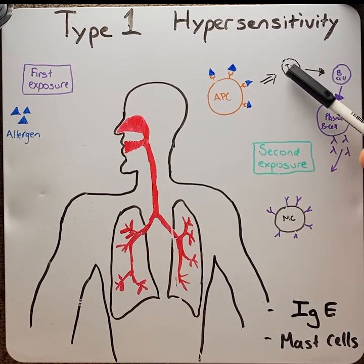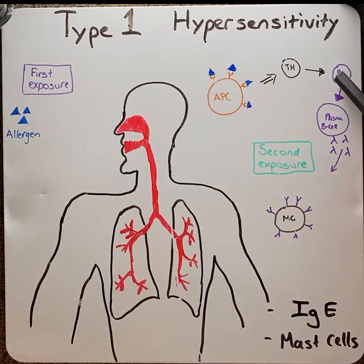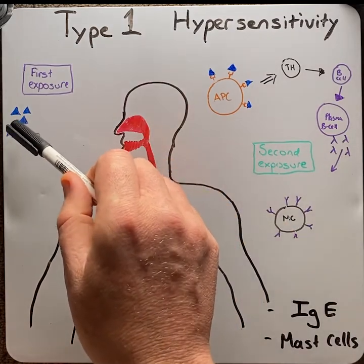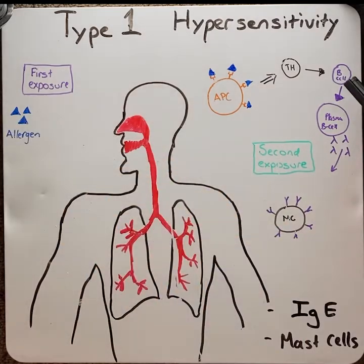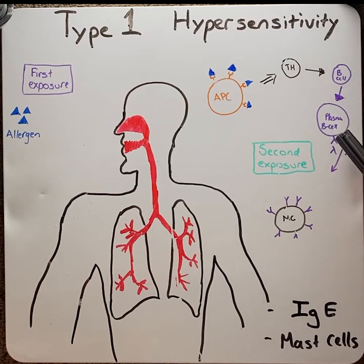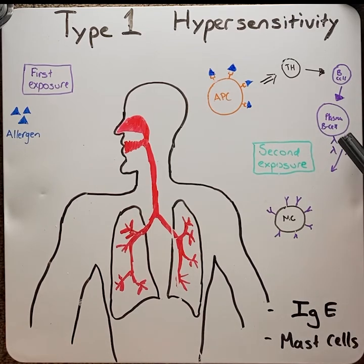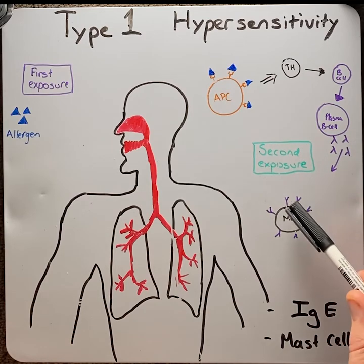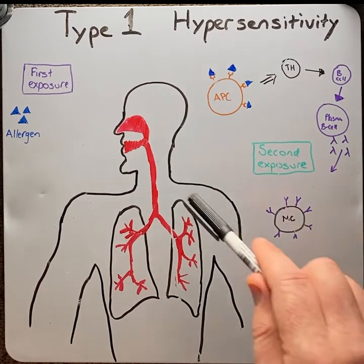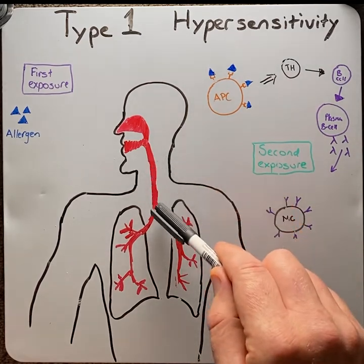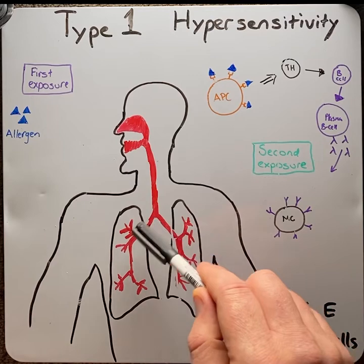The T helper cell selects for a very specific type of B cell that recognizes the pollen. This then goes through clonal expansion into a plasma B cell, which produces a large quantity of IgE antibodies against that pollen. These antibodies then attach to mast cells, which are lined all along the airway.